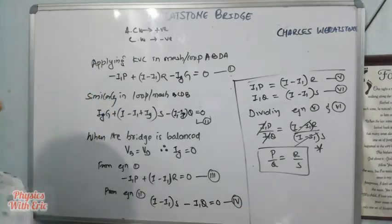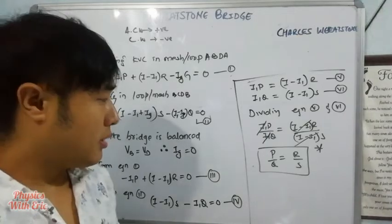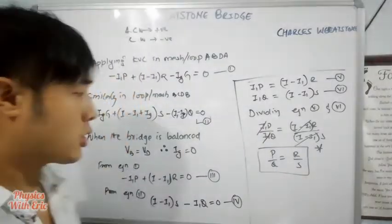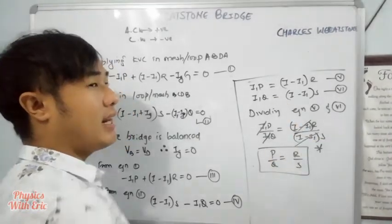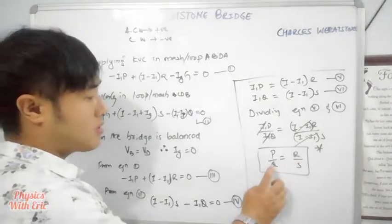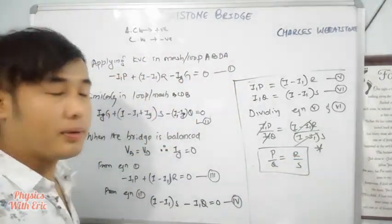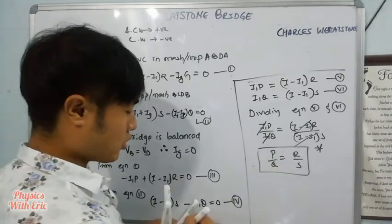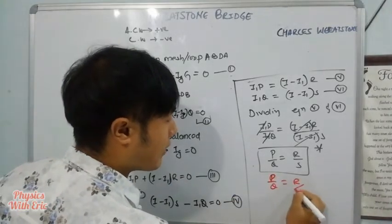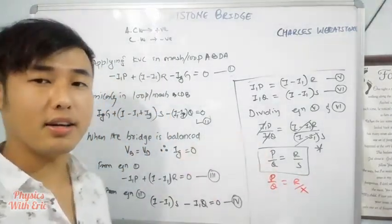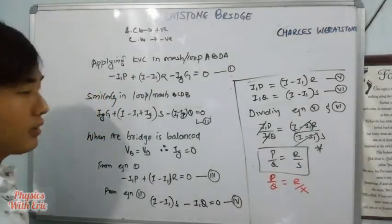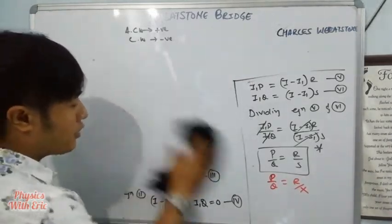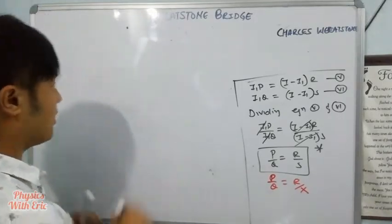This expression gives us the value of the unknown resistance. When the bridge is balanced, P divided by Q equals R divided by S (or R divided by X, where X denotes the unknown resistance). This is the key expression to remember: P/Q = R/S. So when the bridge is balanced, we can directly find the unknown resistance using this formula.